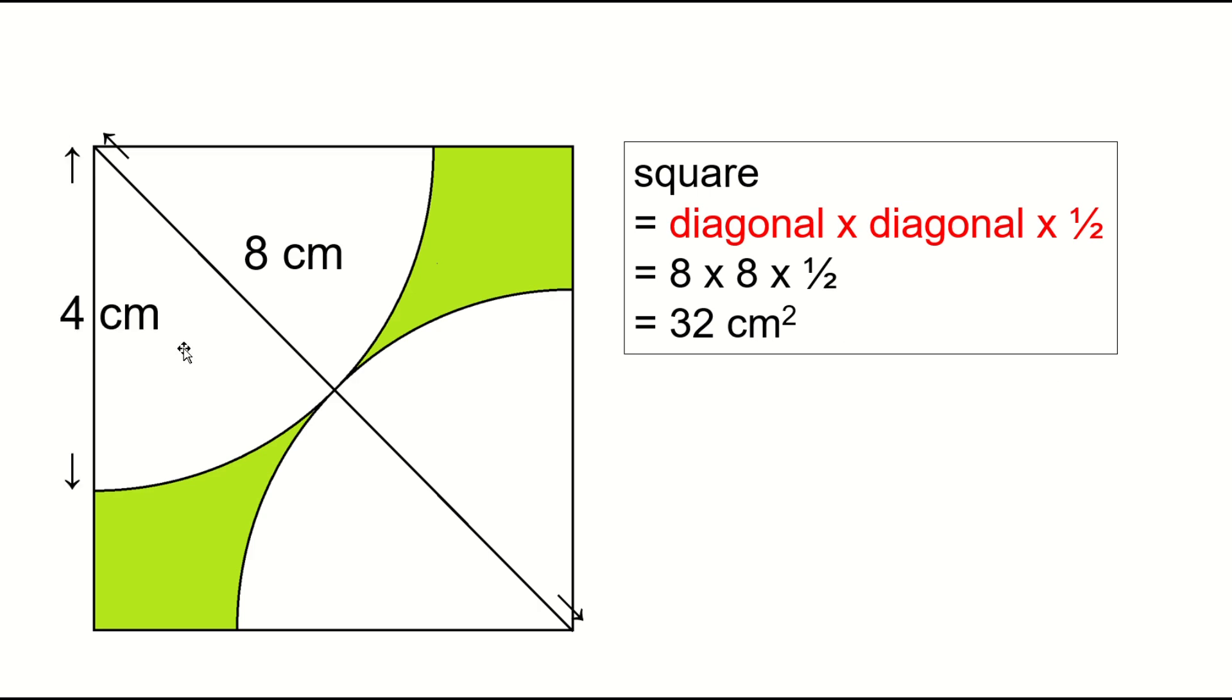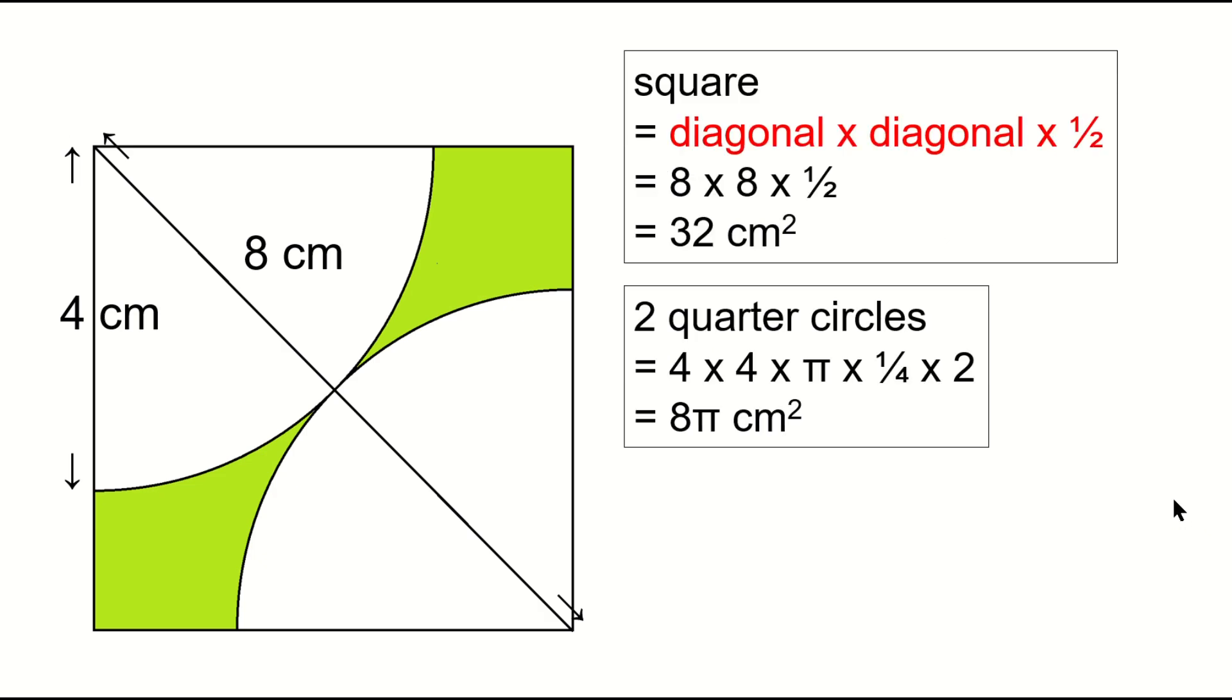Also, this radius is 4 centimeters. The area of the two quarter circles is, radius times radius times pi times 1 fourth times 2, or 8 pi. Therefore, the area of the green region is 32 minus 8 pi.